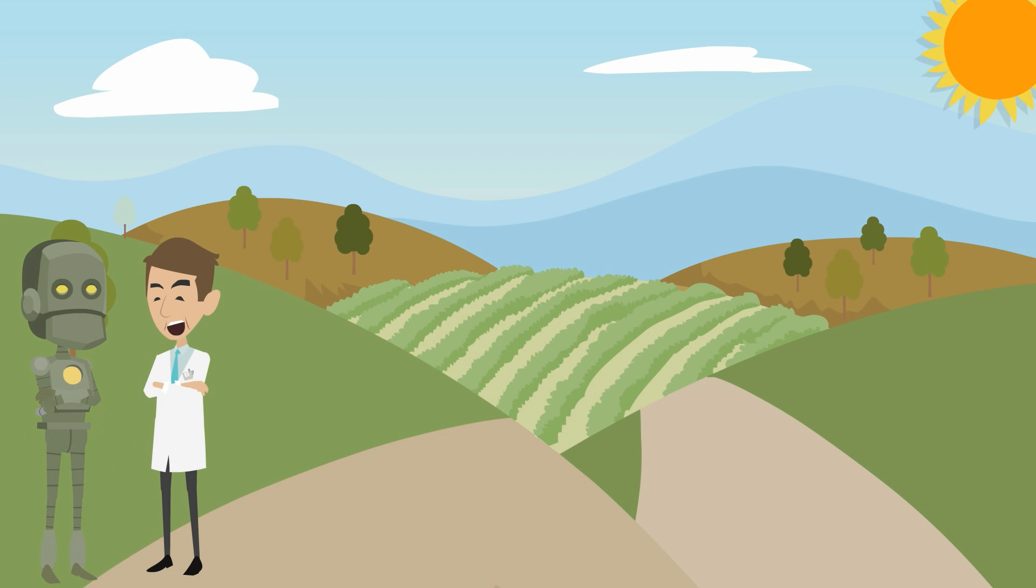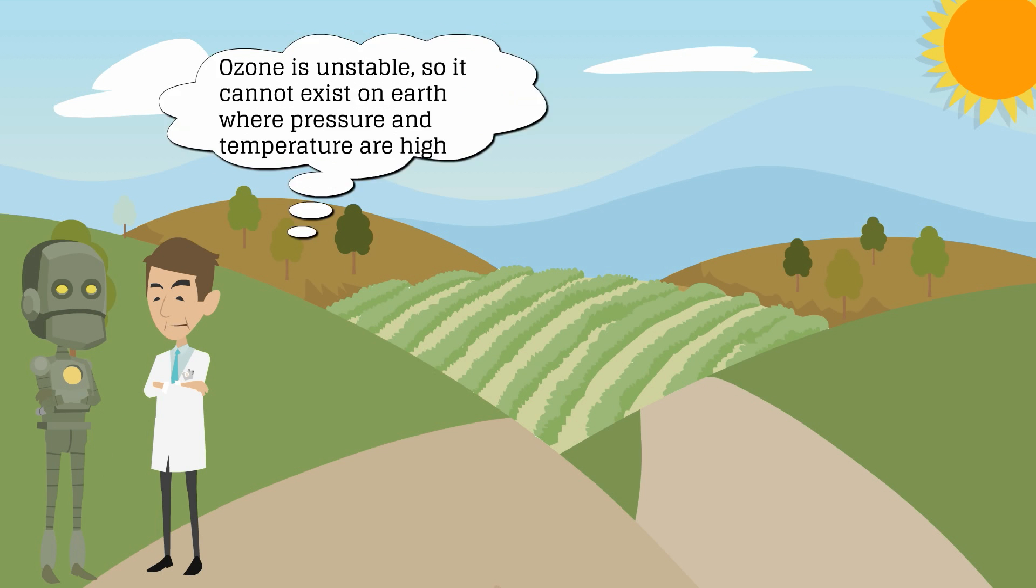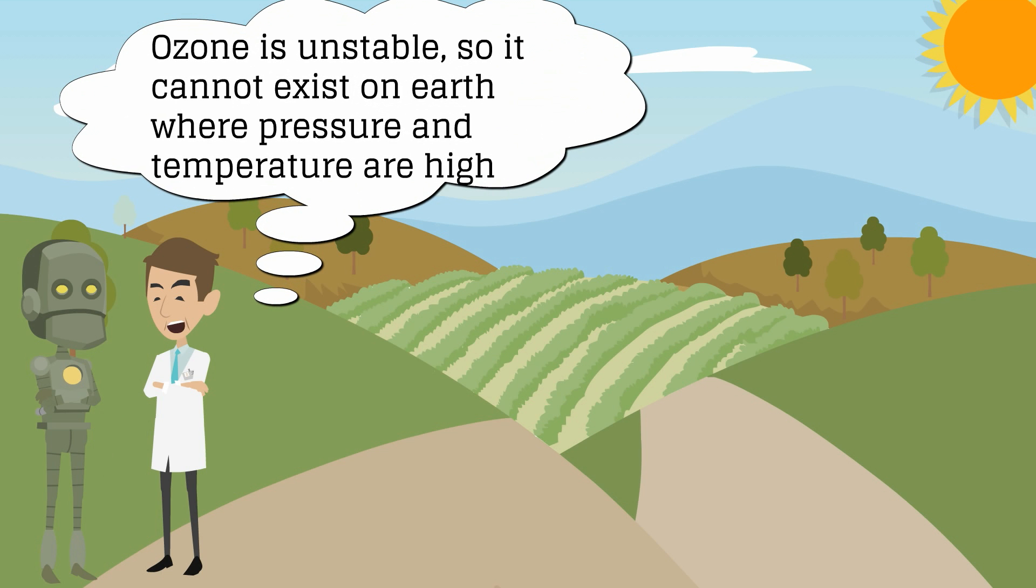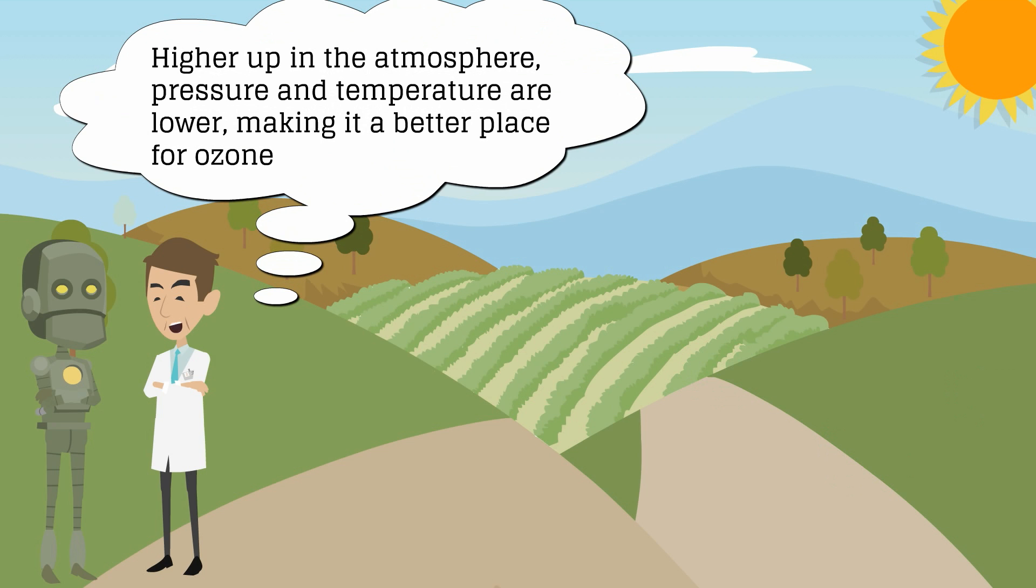Good question. You asked me earlier what the properties of ozone are. One property is that it is unstable, much more so than oxygen gas, or O2. Because of this, stratospheric ozone cannot exist on the Earth's surface, where atmospheric pressure and temperature are so high. These conditions would cause the unstable ozone to decay and revert into oxygen gas, or O2. But higher up in the atmosphere, pressure and temperature are much lower, making it a better place for stratospheric ozone.